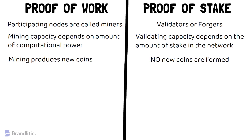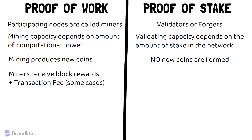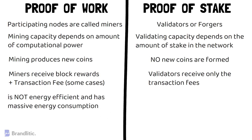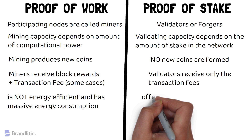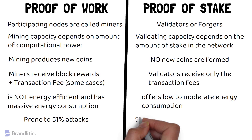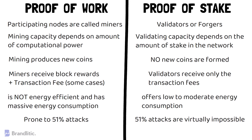In Proof-of-Work, miners receive block rewards and in some cases a transaction fee too, whereas in Proof-of-Stake, validators receive only the transaction fees. Proof-of-Work is not energy efficient and has massive energy consumption as compared to Proof-of-Stake, which offers low to moderate energy consumption. Proof-of-Work is significantly prone to 51% attacks, whereas in Proof-of-Stake, 51% attacks are virtually impossible.